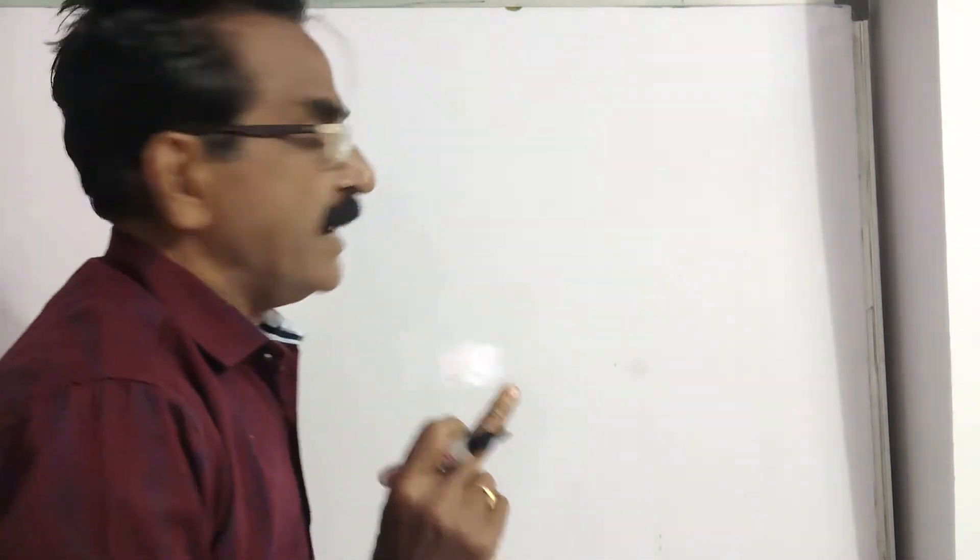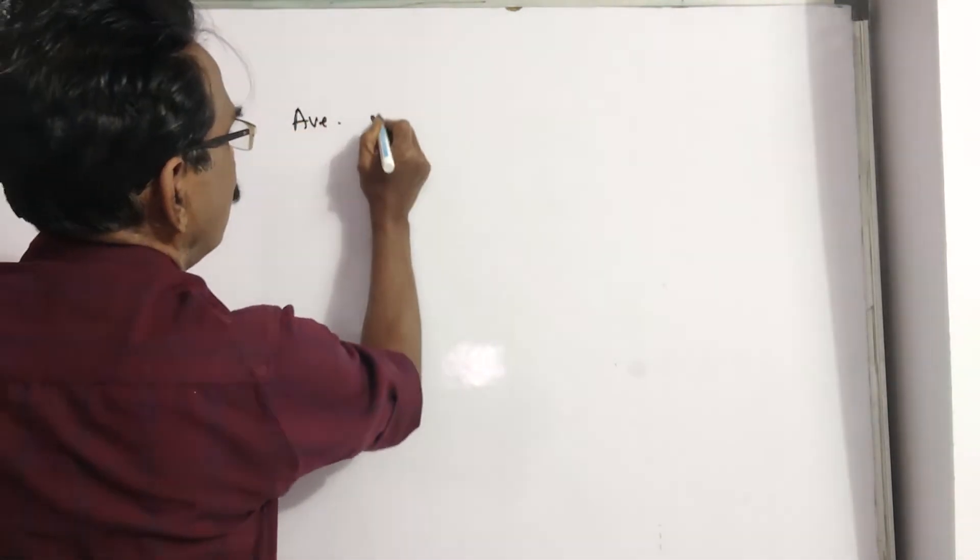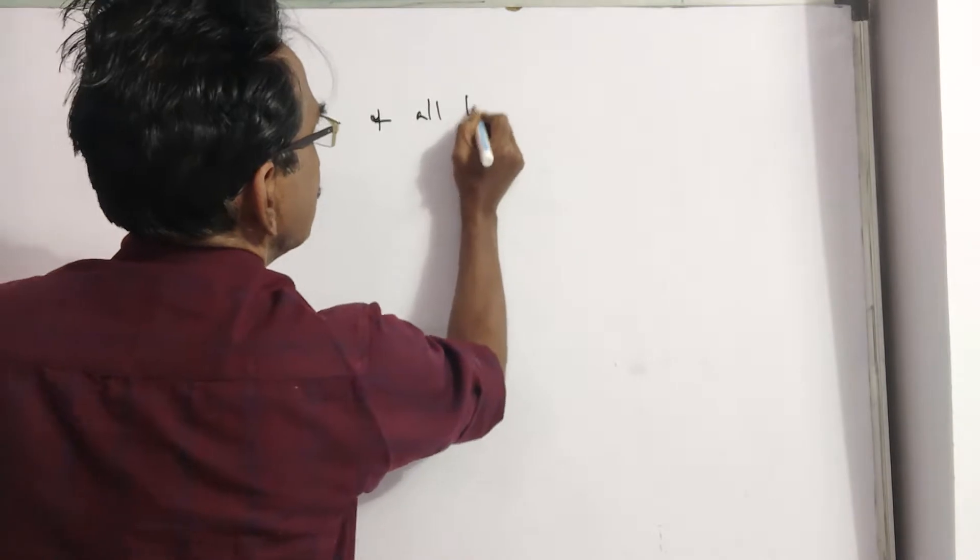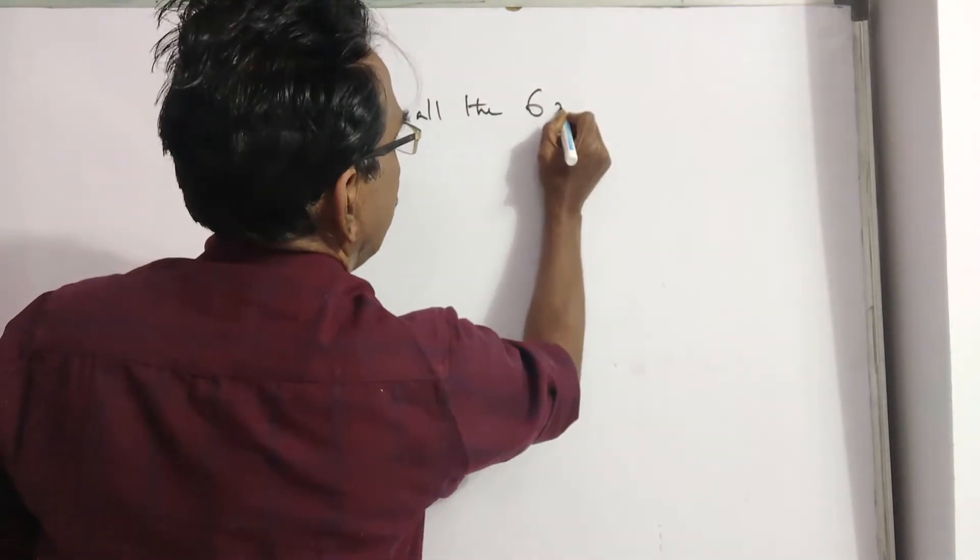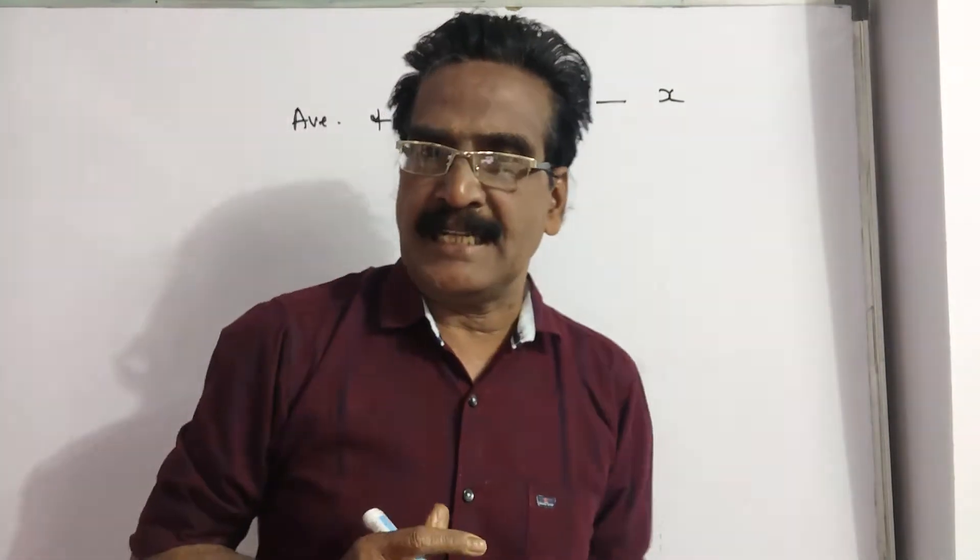When I was married 10 years ago, my wife is the 6th member of the family. So, the average age of all the 6 members of the family, say X at the time of marriage.